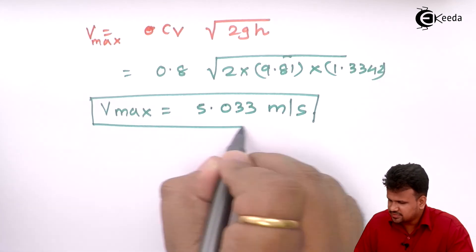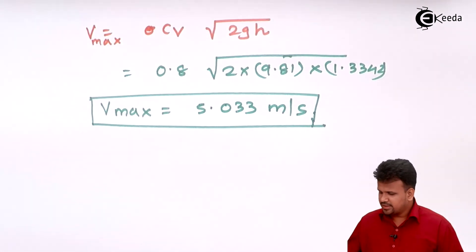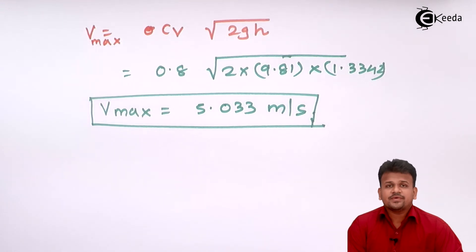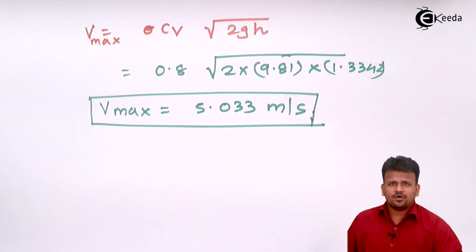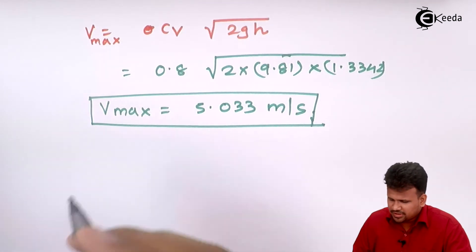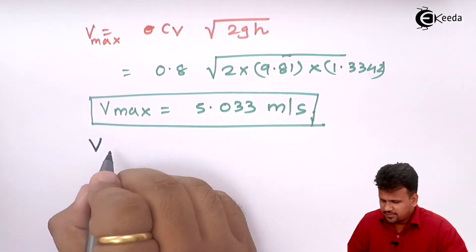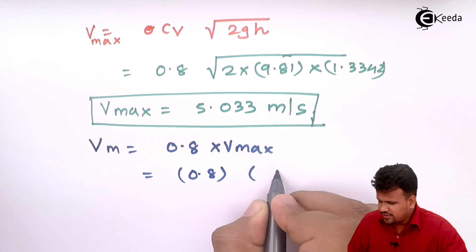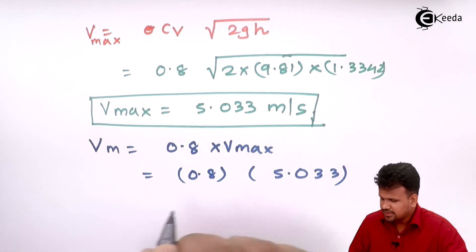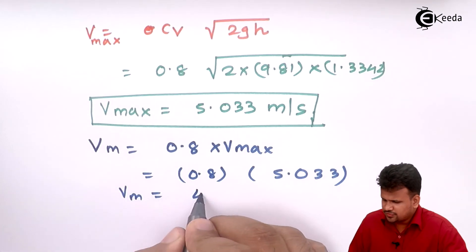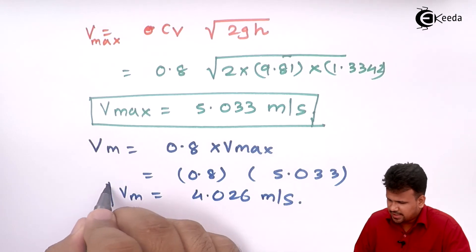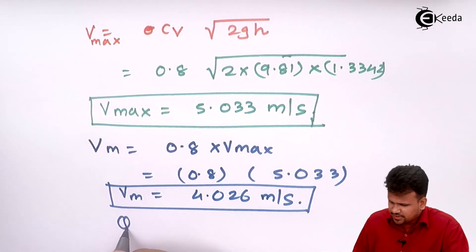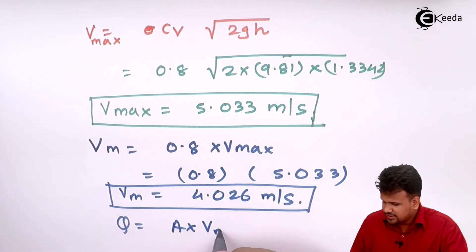We have calculated the maximum velocity at the center, but for discharge we need the mean velocity, which is the mean of the total velocity throughout the cross-section. The relation given is V_mean equals 0.8 into V_max, so V_mean equals 0.8 into 5.033, which gives 4.026 meters per second.